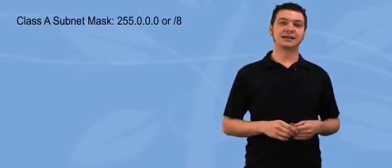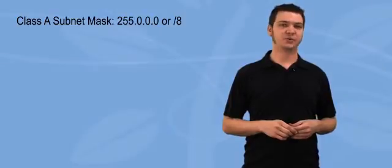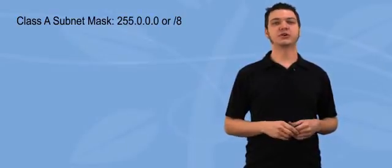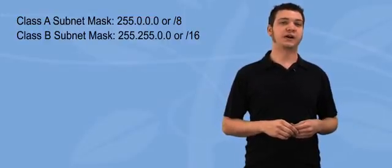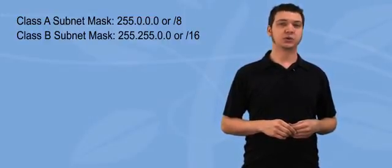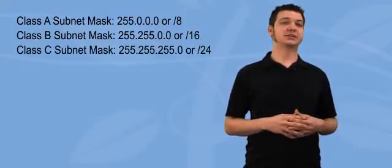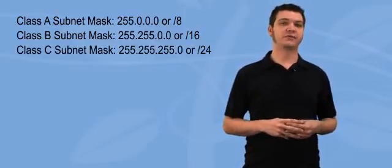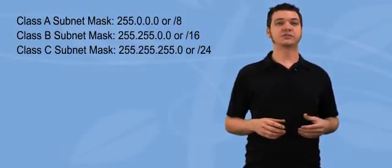Fact number 1. Class A addresses always start with a subnet mask of 255.0.0.0, also known as slash 8. Class B addresses always start with a subnet mask of 255.255.0.0, also known as slash 16. Class C addresses always start with a subnet mask of 255.255.255.0, also known as slash 24.